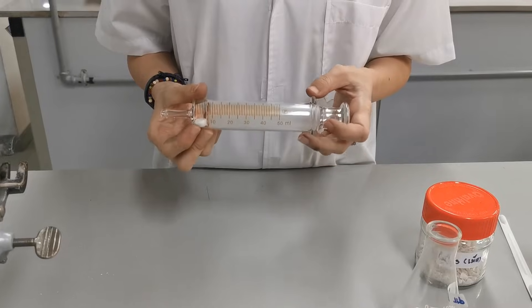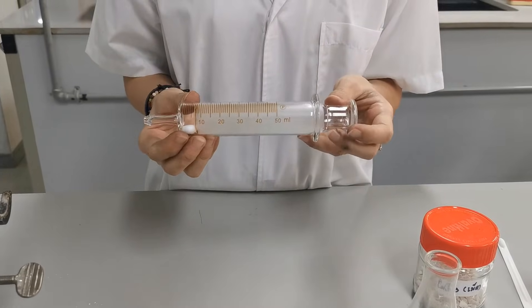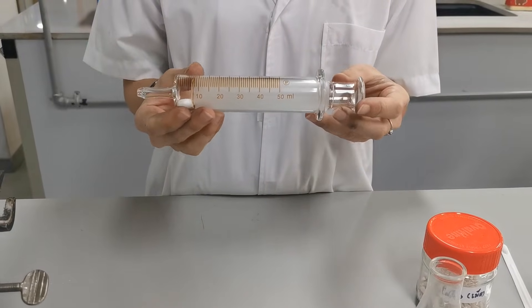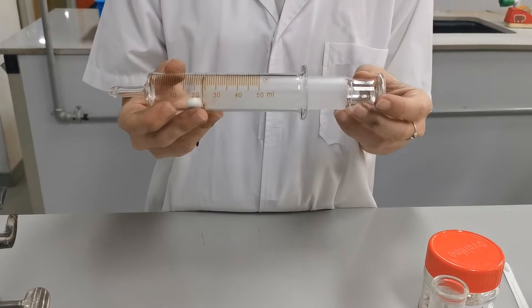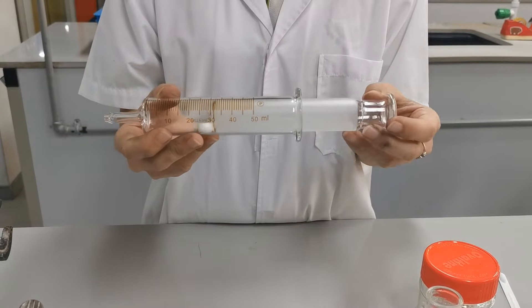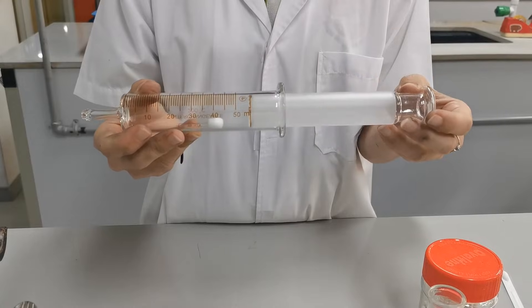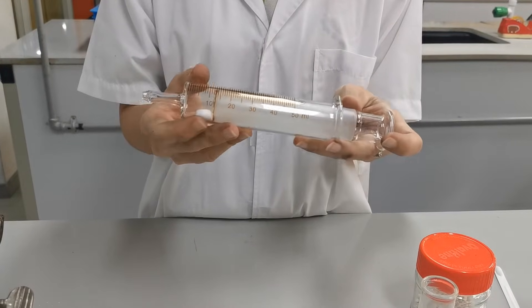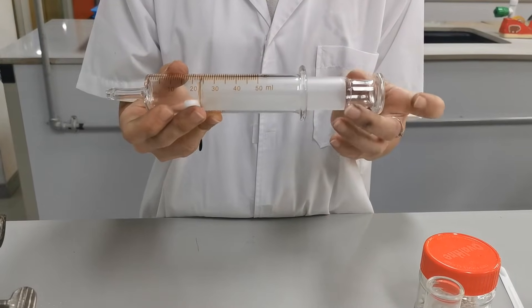One method of collecting and measuring the volume of gas is using a gas syringe. The gas syringe is made of glass and the plunger can move very smoothly in the barrel. Any increase in gas pressure inside the barrel will push the plunger outwards.